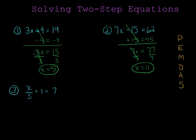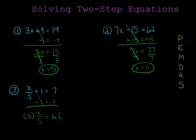Let's do a two-step problem that has division in it. This is x divided by 5 plus 1 equals 7. I will get rid of the addition and subtraction before I get rid of the multiplication and division. I'll get rid of addition with minus 1 and subtract 1 from the other side as well. Plus 1 minus 1 goes away and I'm left with x over 5 equals 6. Now the opposite of division is multiplication, so I need to multiply by 5 to get rid of this divide by 5. I'll put times 5 on both sides of my equation. The 5 that I multiply by gets rid of the 5 in the denominator, and I'm left with x is equal to 30.